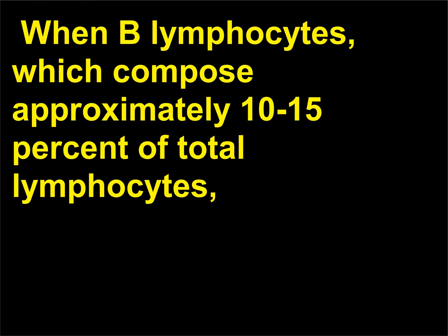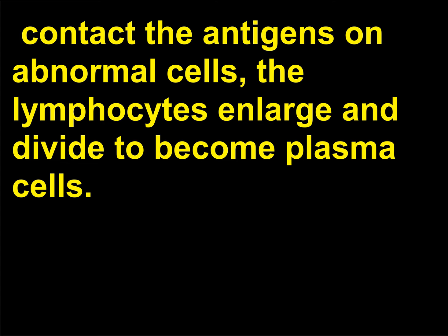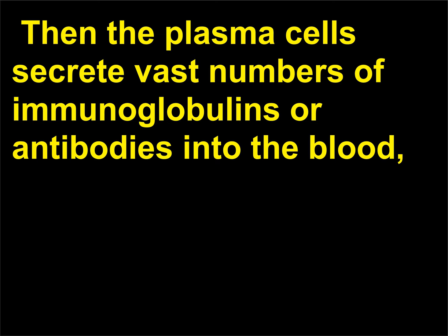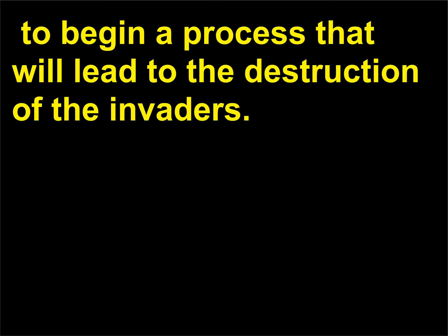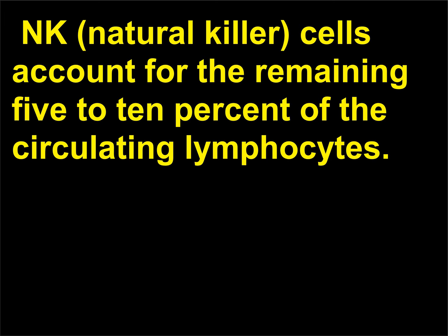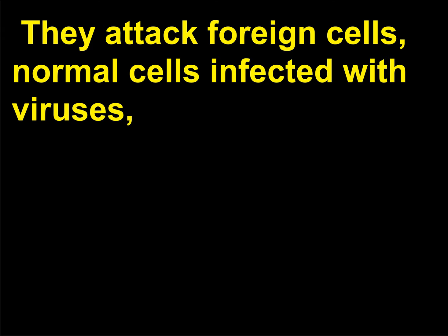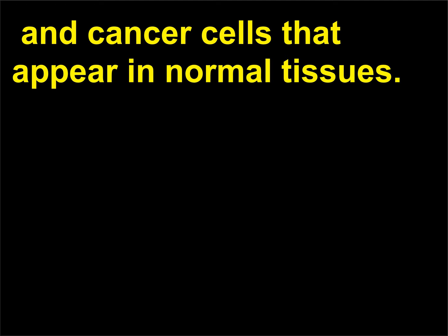Helper T cells assist killer cells in their activities and control other aspects of the immune response. When B lymphocytes, which compose approximately 10 to 15% of total lymphocytes, contact the antigens on abnormal cells, the lymphocytes enlarge and divide to become plasma cells, which then secrete vast numbers of immunoglobulins or antibodies into the blood. These attach themselves to the surfaces of the abnormal cells to begin a process that will lead to the destruction of the invaders. Natural killer (NK) cells account for the remaining 5 to 10% of circulating lymphocytes and attack foreign cells, normal cells infected with viruses, and cancer cells that appear in normal tissues.